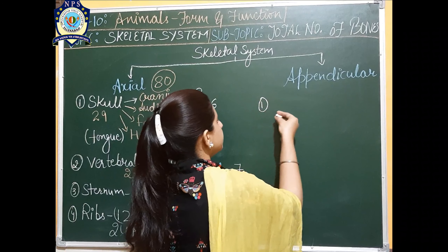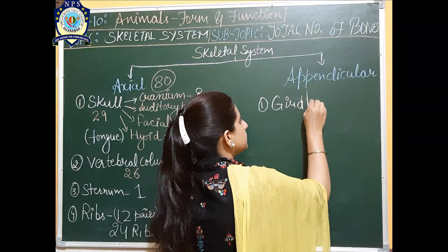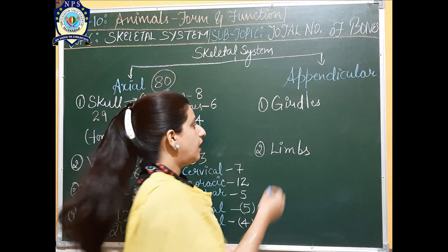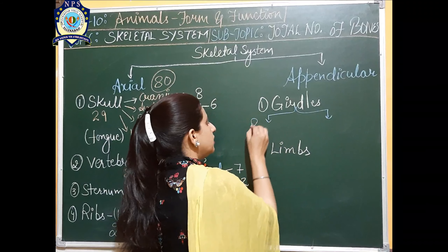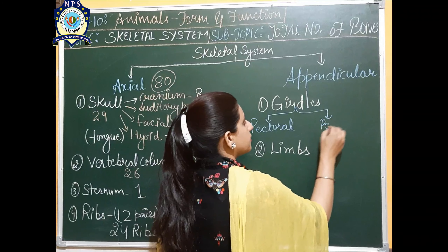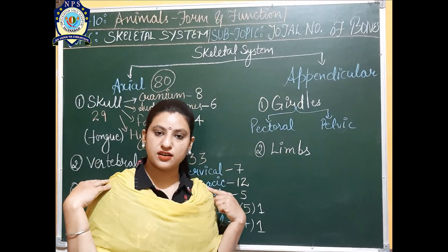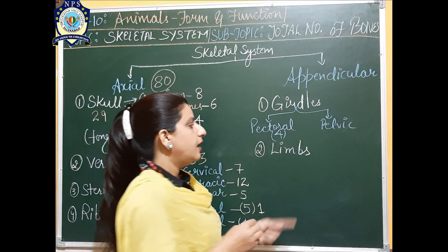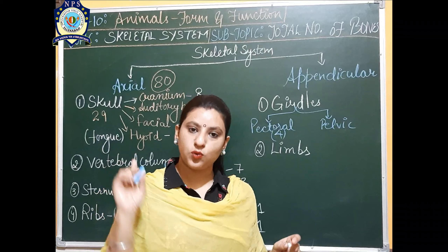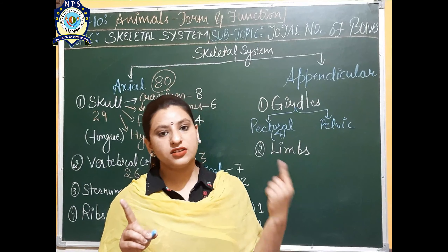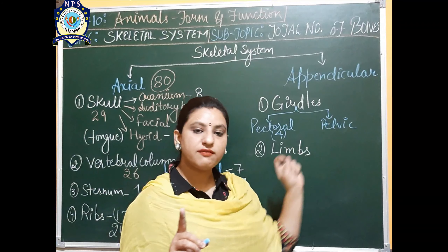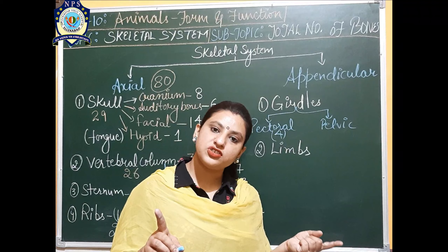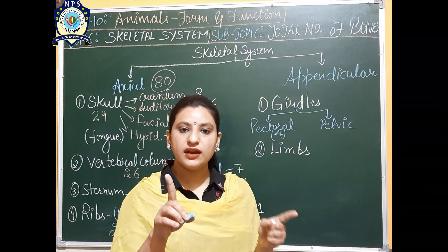The second part is the vertebral column. The vertebral column has a total of 33 vertebrae. The parts into which the vertebral column is divided are: cervical (neck region) — 7 bones; thoracic (chest region) — 12 bones; lumbar (belly region) — 5 bones.